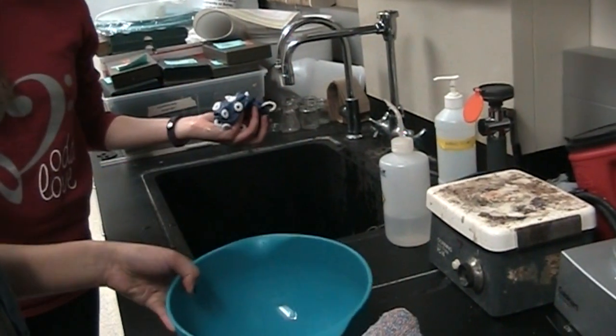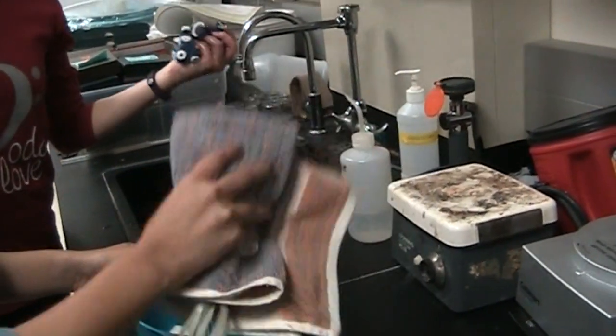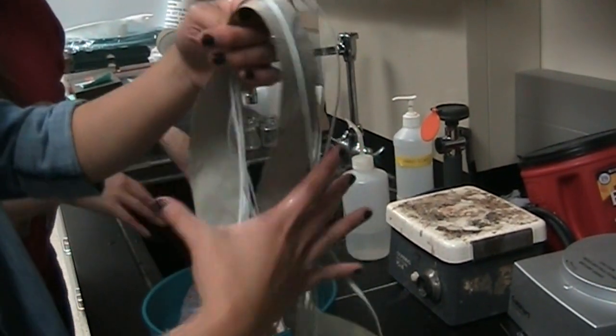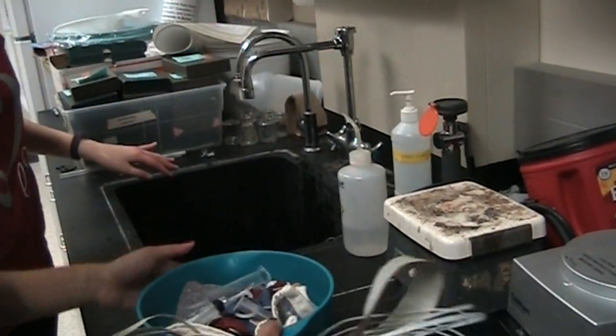And the reason that we take the towel in the prep room is in part because the electrodes are not supposed to touch any metal. As you can see, there's lots of metal in this room. So that just ensures that we're not damaging the electrodes.